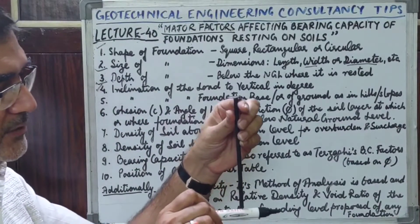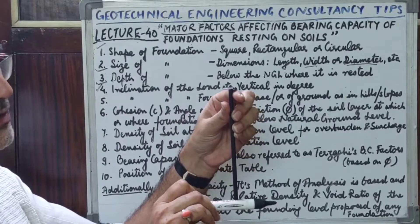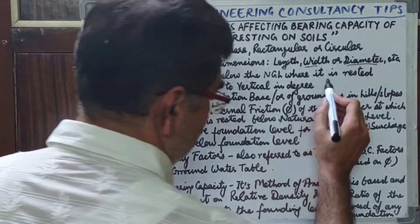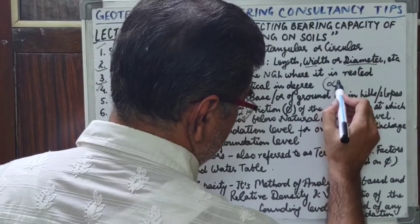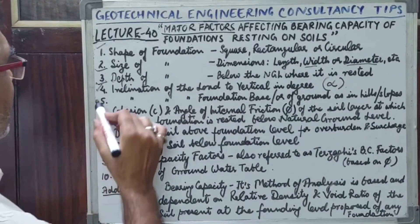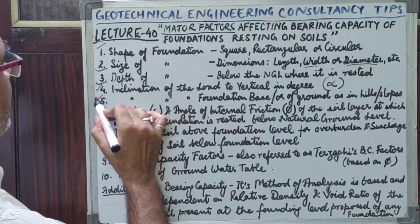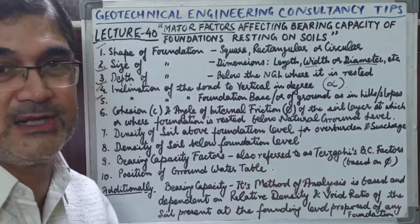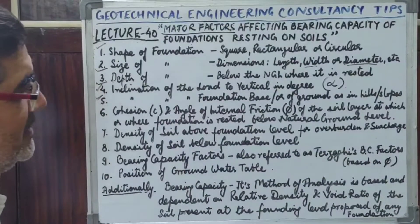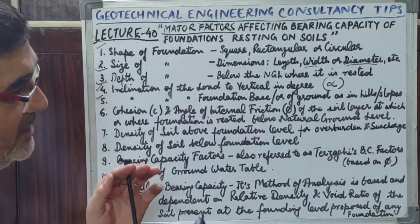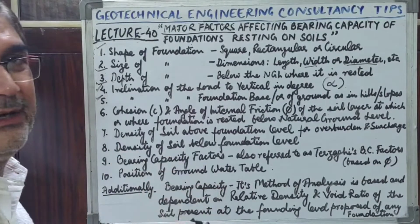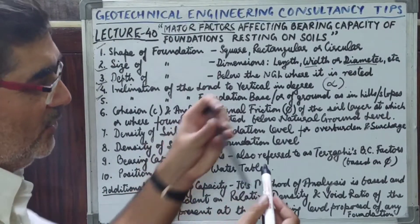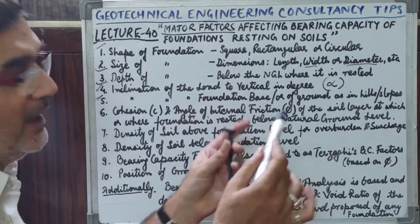The inclination of the load to the base — where the surface is vertical to the base — is referred to as alpha. The fifth factor is the inclination of the foundation base or of the ground, as in hills and slopes, because in certain cases the foundation base may be tilted, or you may have to build the foundation in a horizontal direction on a sloping ground.